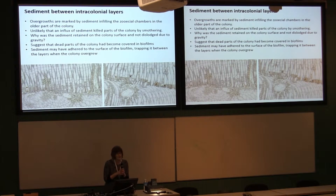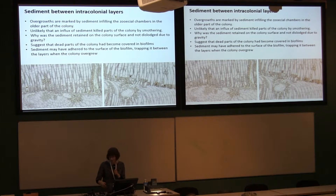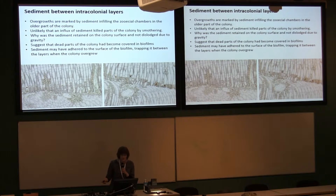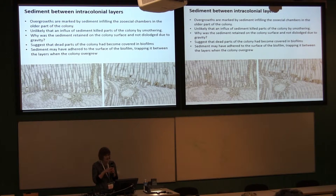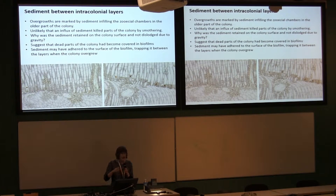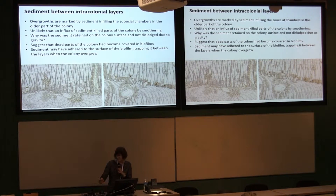It's unlikely that an influx of sediment killed parts of the colony by smothering, because bryozoans are quite adept at removing sediment. It's strange that the sediment is actually retained on the colony surface, especially for those growing downwards, where you'd expect gravity to dislodge it. So we suggest that dead parts of the colonies may have been covered in biofilms, and sediment attached itself to the biofilm surface, trapping it, before the colony overgrew itself.